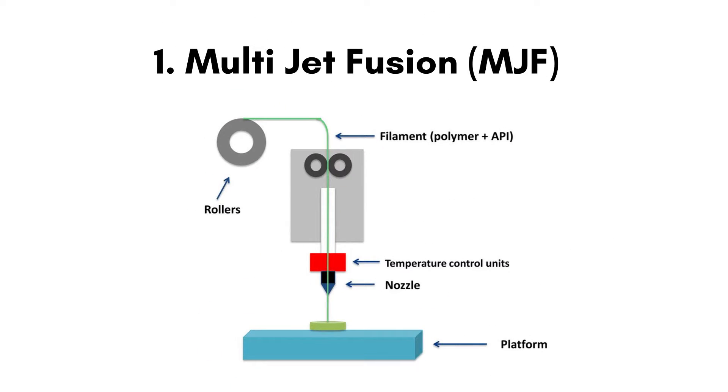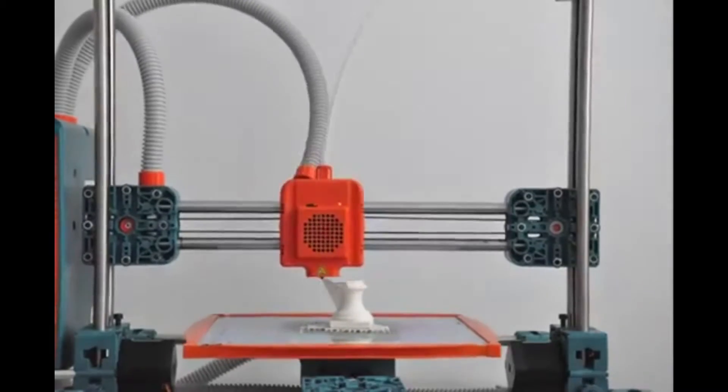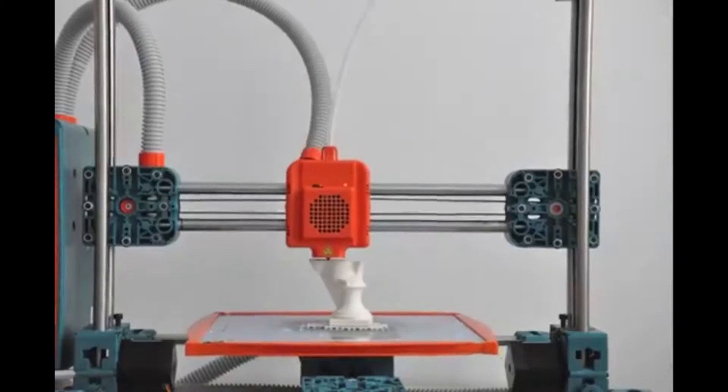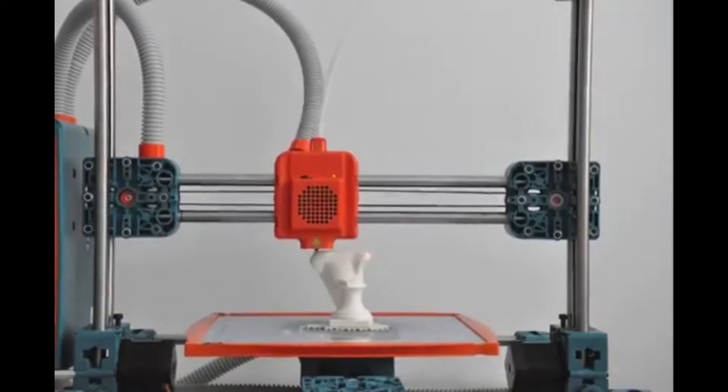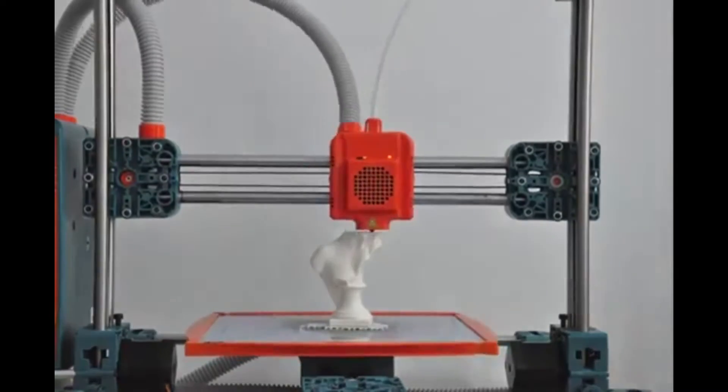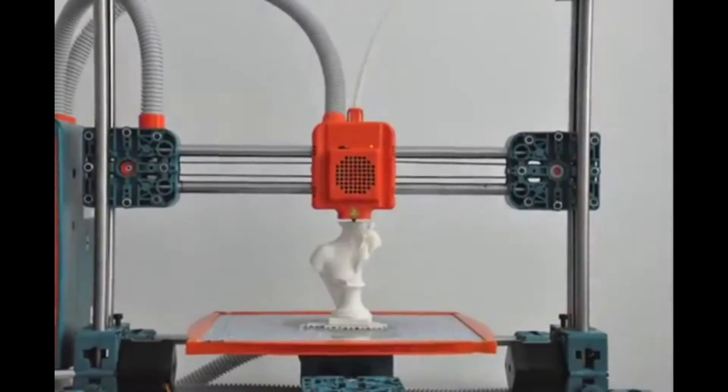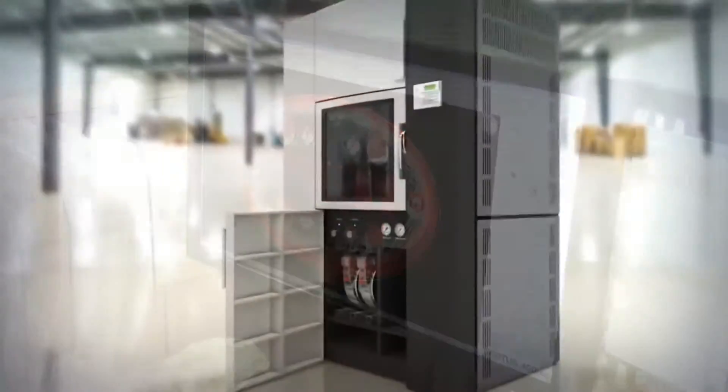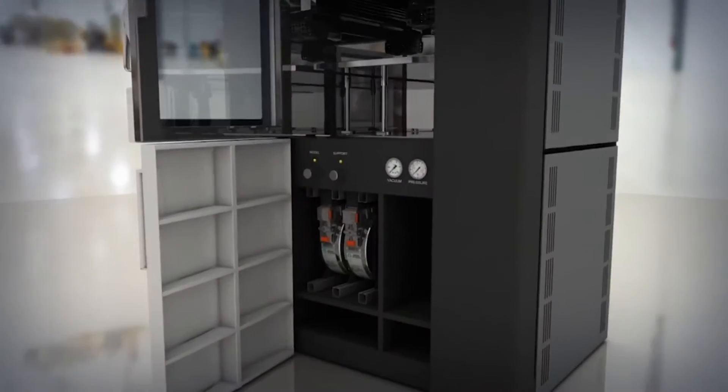Number 1. MultiJet Fusion or MGF. FDM uses additive manufacturing technology in which the model is printed layer by layer on top of each to produce the right 3D model. The nozzle goes through a particular path to make 2D layers on top of the previous layer. This will result in giving a good finish to the 3D model. FDM technology is widely known as the simplest form of 3D printing technology.